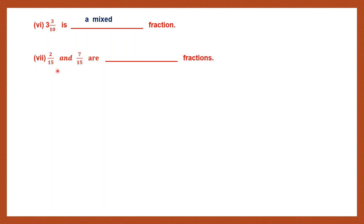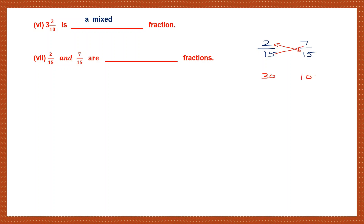Question 7: Here we have two fractions, 2 by 15 and 7 by 15. The denominators are the same, so they are like fractions. You can also check if they are equivalent fractions by cross multiplying. 2 into 15 is 30, and 15 into 7 is 105. They are not equal to each other, so you cannot call them equivalent fractions. 2 by 15 and 7 by 15 are simply like fractions.